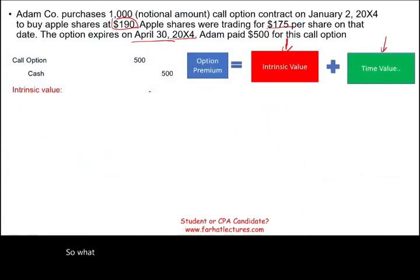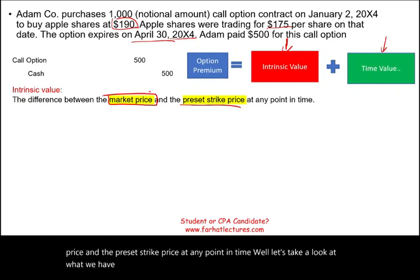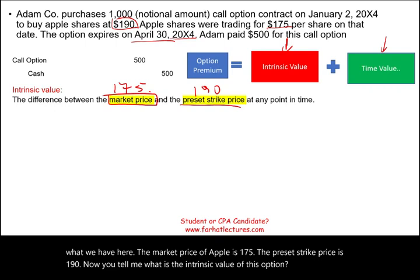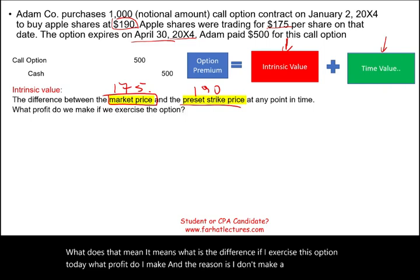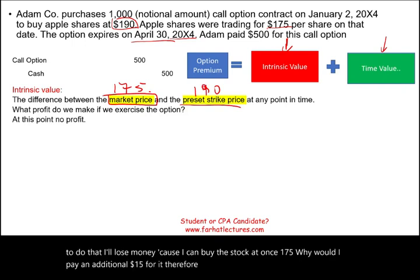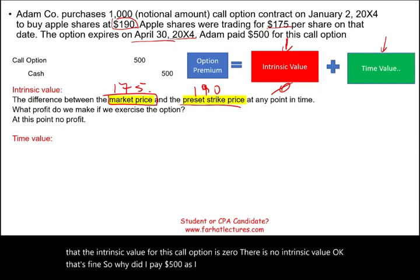So what is intrinsic value? Intrinsic value is the difference between the market price and the preset strike price at any point in time. The market price of Apple is $175 and the preset strike price is $190. What is the intrinsic value of this option? It means: if I exercise this option today, what profit do I make? I don't make a profit — I'd be crazy to do that. I'd lose money because I can buy the stock at $175, so why would I pay an additional $15? Therefore, at this point, the intrinsic value for this call option is zero. There is no intrinsic value.